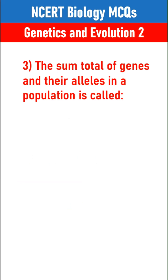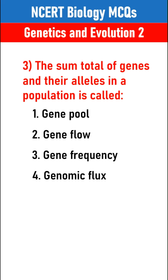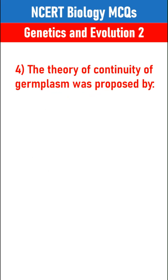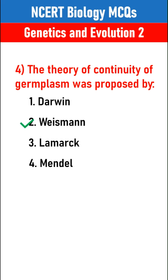The sum total of genes and their alleles in a population is called: gene pool. The theory of continuity of germplasm was proposed by: Weismann.